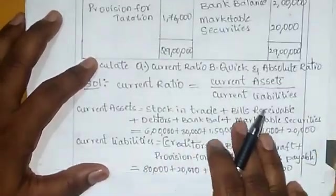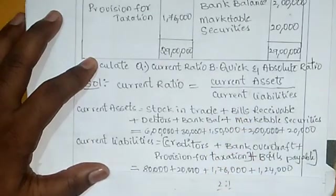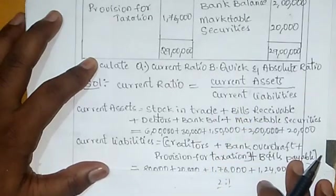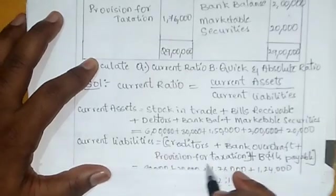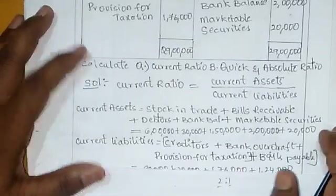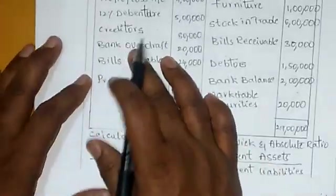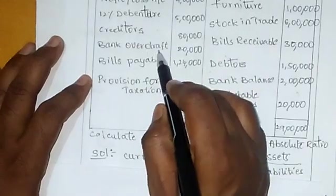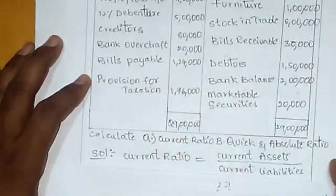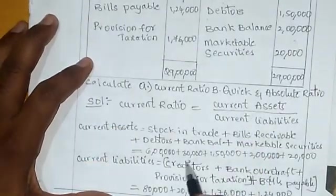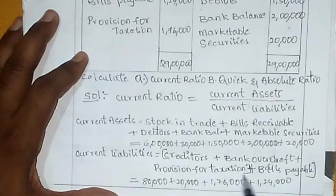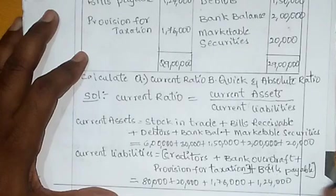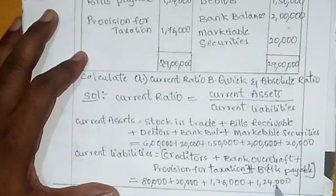Now let's calculate current liabilities — debts to be cleared within one year. Current liabilities = creditors + bank overdraft + provision for taxation + bills payable. From the problem: creditors 80,000, bank overdraft 20,000, provision for taxation 1 lakh 76,000, bills payable 1 lakh 24,000.